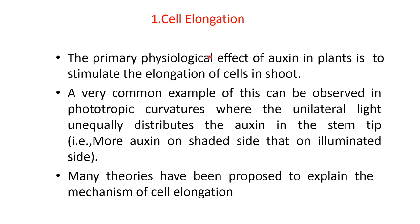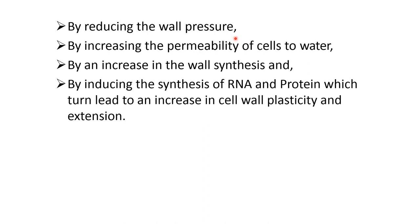Cell elongation. The primary physiological effect of auxin in plants is to stimulate elongation of cells in shoots. A very common example can be observed in phototropic curvature, where unilateral light unequally distributes auxin in the stem tip — more auxin on the shaded side than on the illuminated side. Many theories have been proposed to explain the mechanism of cell elongation, including reducing wall pressure, increasing the permeability of cells to water, increasing wall synthesis, and inducing the synthesis of RNA and protein, which in turn leads to an increase in cell wall plasticity and extension.